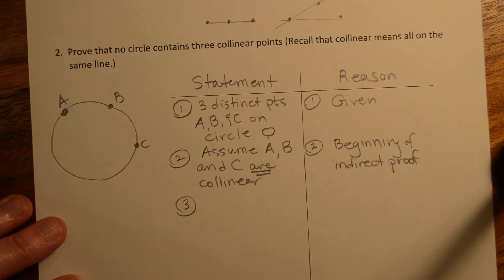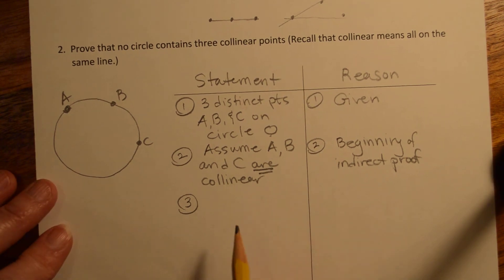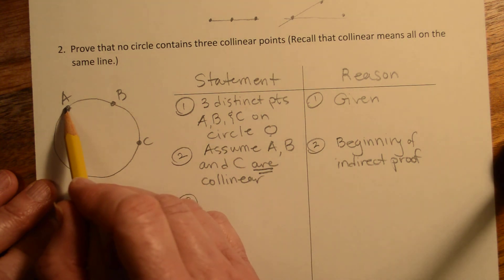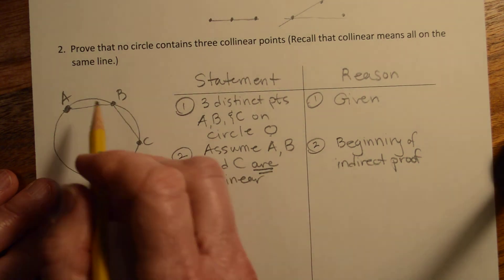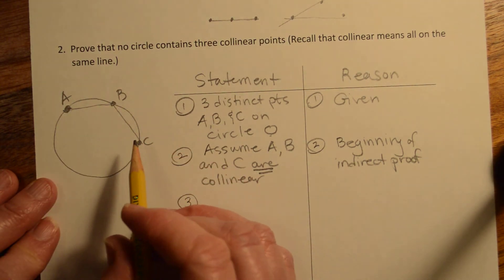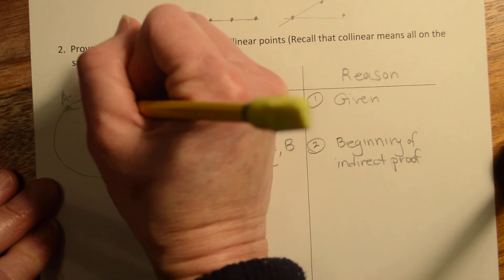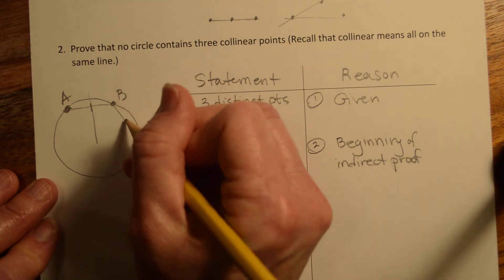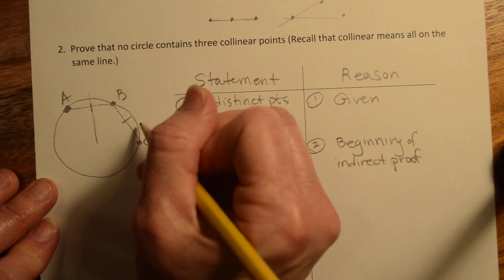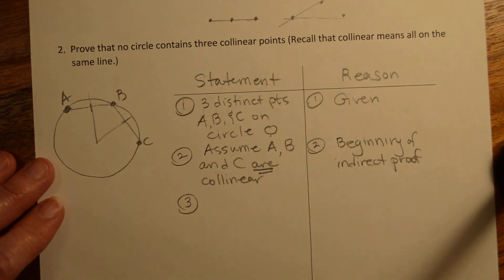Okay. Reason three. So from the last step, or the last proof, we learned that the perpendicular bisector of each of these, right, so the perpendicular bisector of A, B must cross through the center of the circle, right, so let's just draw that about in here, perpendicular bisector, and the perpendicular bisector here of B, C must also cross through the center of the circle.